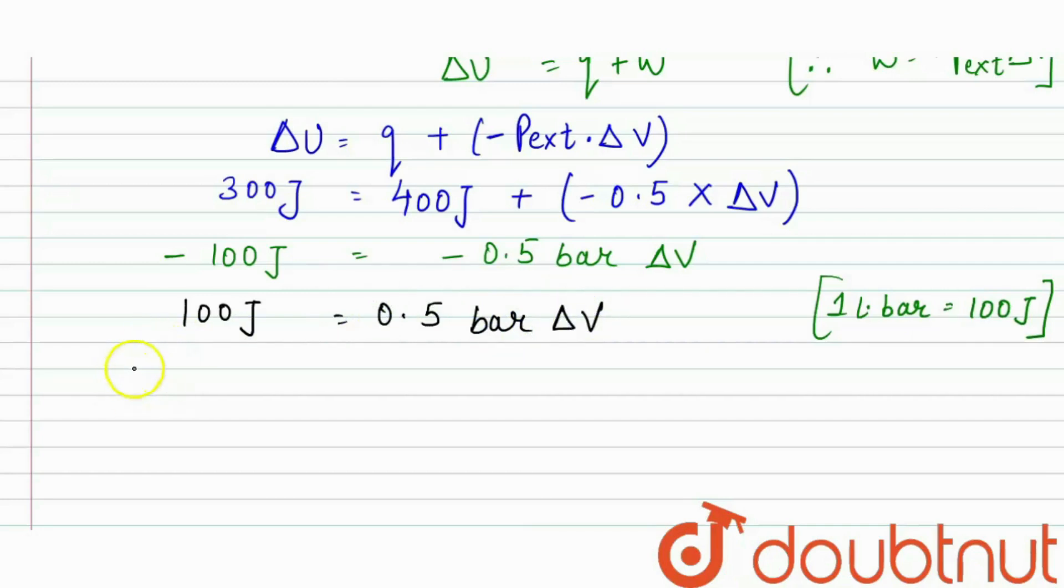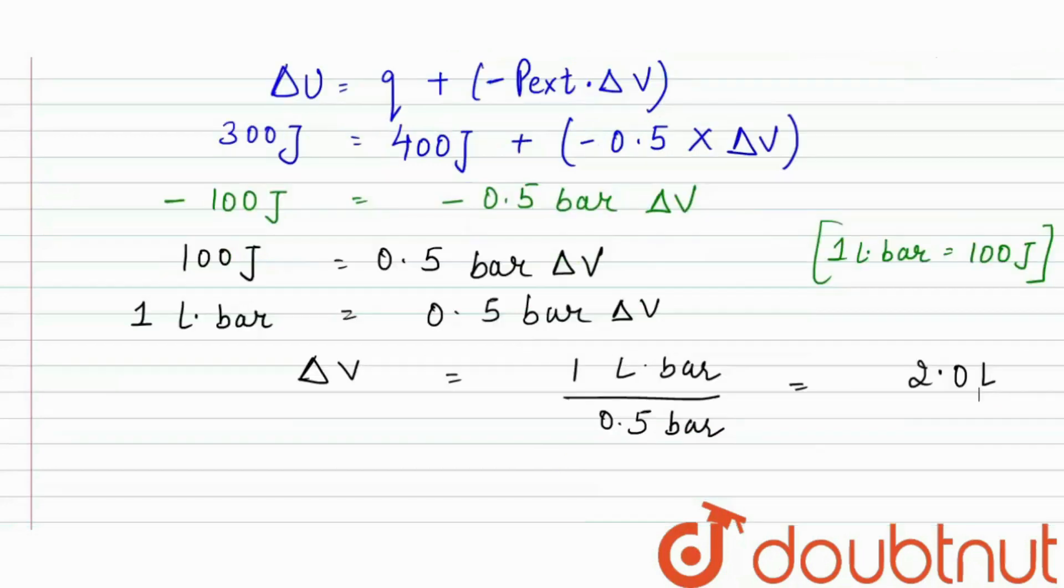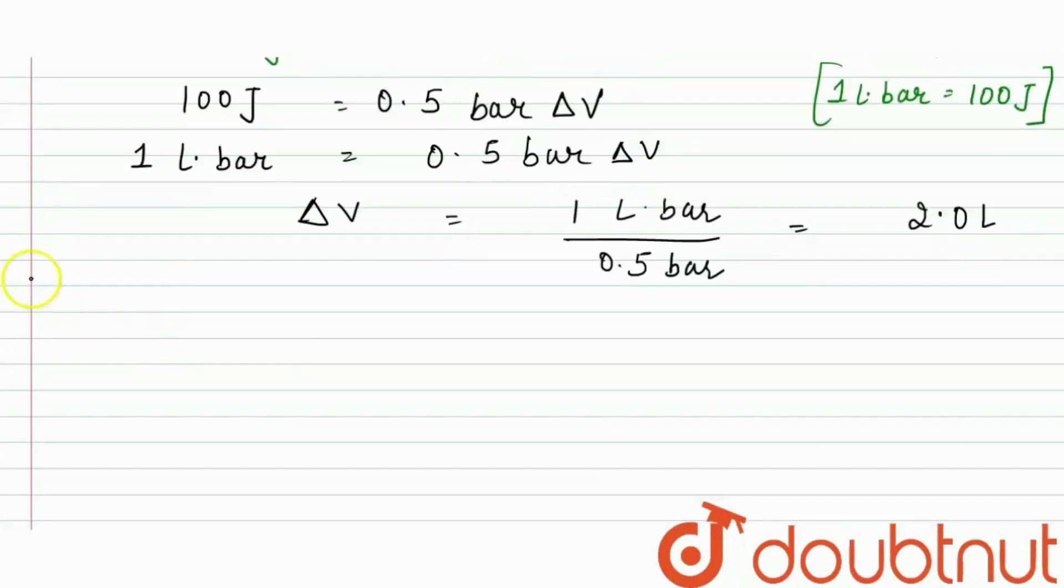From here, delta V will be equal to 1 liter-bar upon 0.5 bar, so we will be left with 2 liters. That's our required answer. We required the delta V value in liters for this whole system, and that is delta V equals 2 liters.